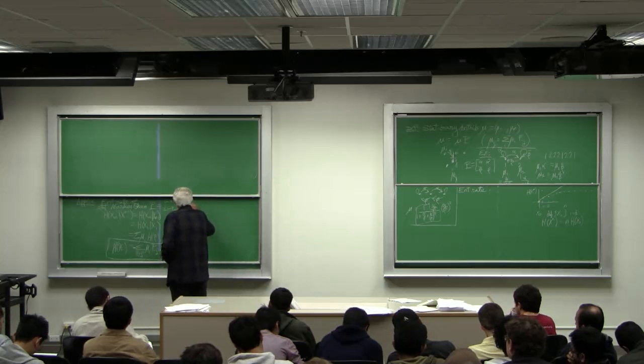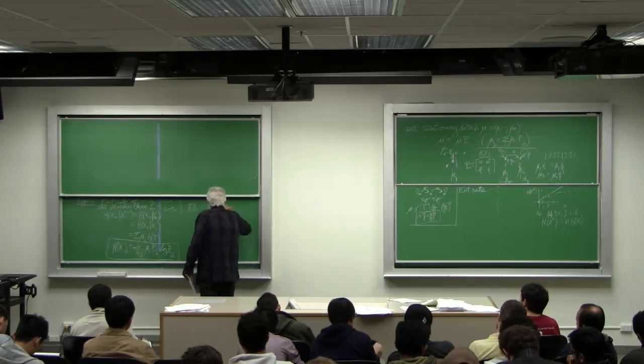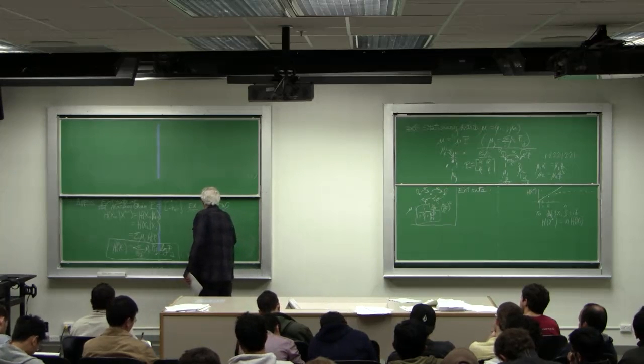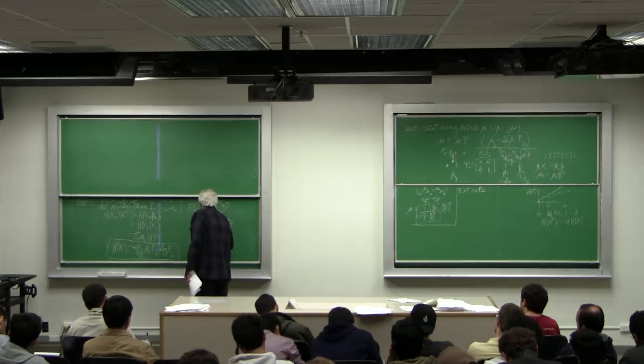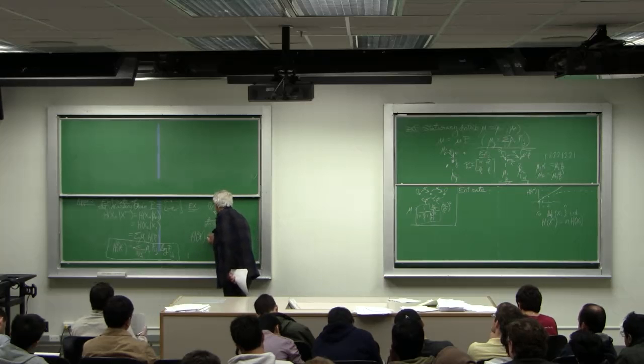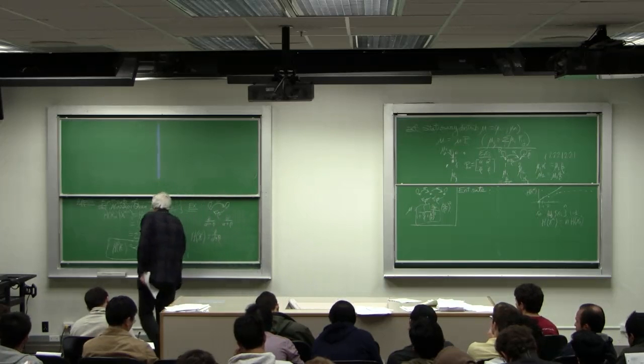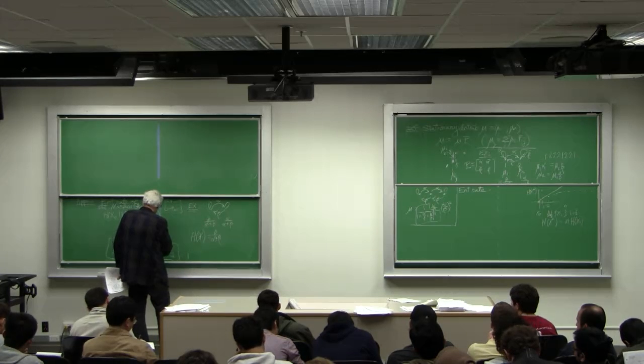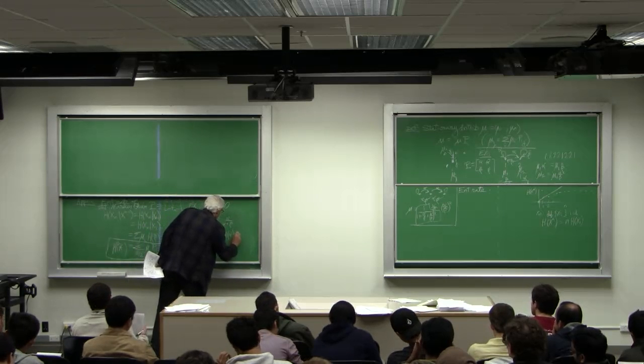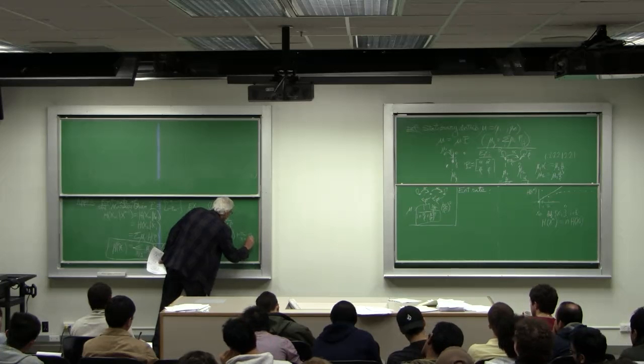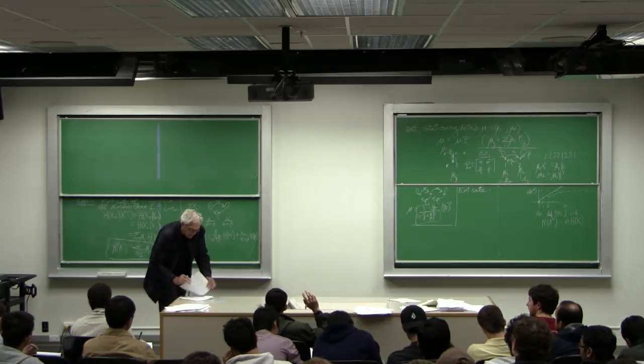And so an example, alpha, beta, which we looked at before. Stationary distribution, beta over alpha plus beta, alpha over alpha plus beta. Well it's the probability I'm in state 1. Beta over alpha plus beta times H of 1. Well, I'm not going to write that out. This is h of alpha plus alpha over alpha plus beta h of beta. So you can do that for any Markov chain.